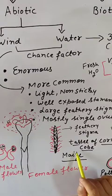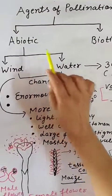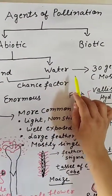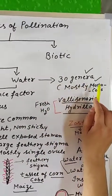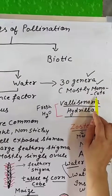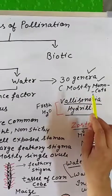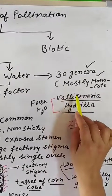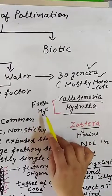The second abiotic agent is water. Water pollination is less common — it is only found in 30 genera of plants, and mostly monocots. Monocots are those plants in which only one cotyledon is present. Examples include Vallisneria and Hydrilla, both of which are fresh water plants.